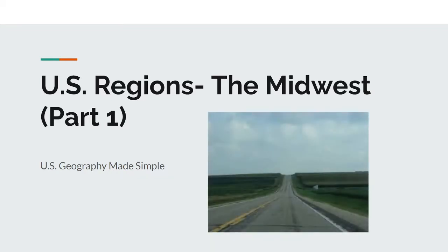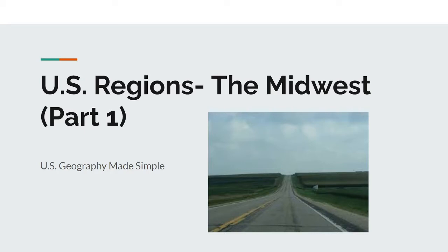In reality, the Midwest has many types of geographical features, from lakes to creeks, from peninsulas to plateaus, as it is such a vast region and encompasses so much land. And that provides an excellent segue to our first slide: location.